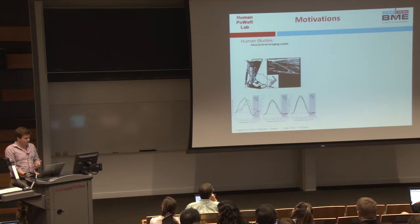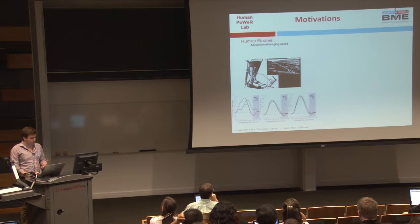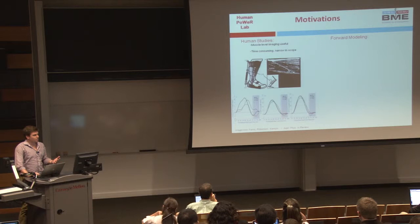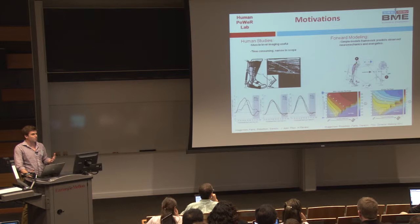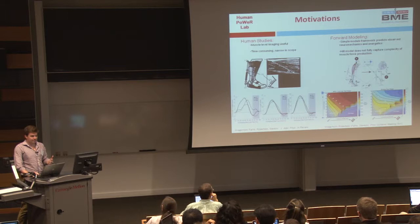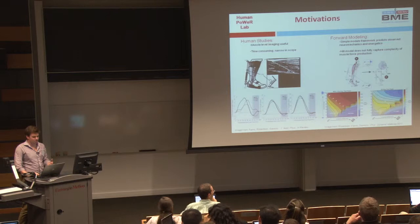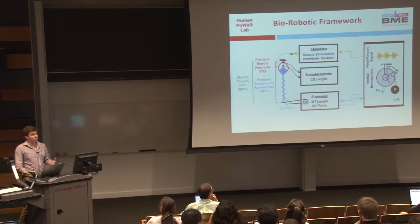We've done some human studies, muscle-level imaging, and characterized the human neuromechanical interaction with a wearable robotic exoskeleton. However, these are very time-consuming and narrow in scope. We've also done some simple forward modeling, which nicely predicted observed neuromechanics and energetics from human studies. But the Hill model of muscle contraction leaves a lot to be desired — there are shortcomings that make the modeling approach useful, but only to a point.